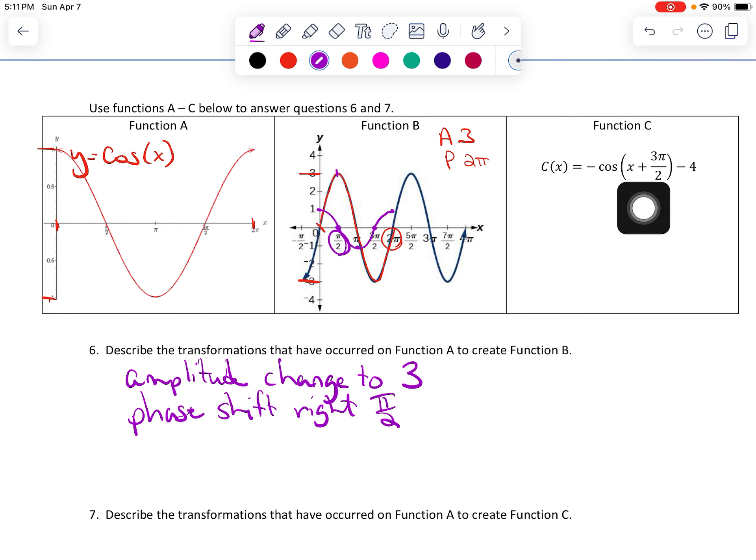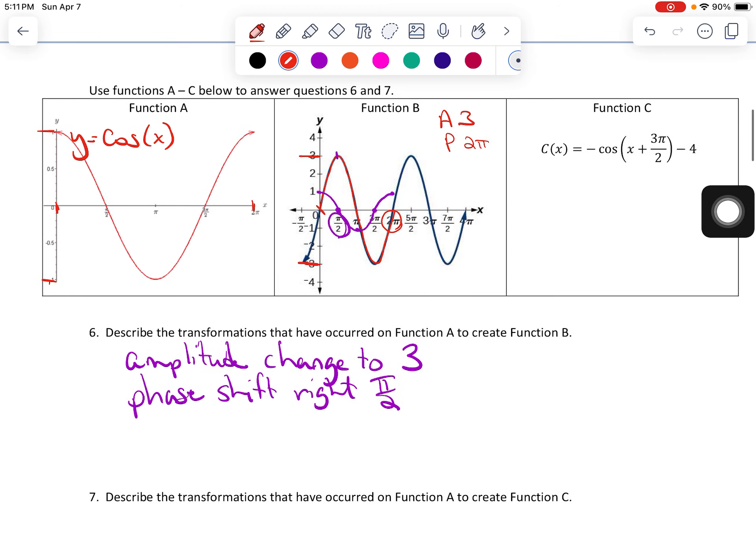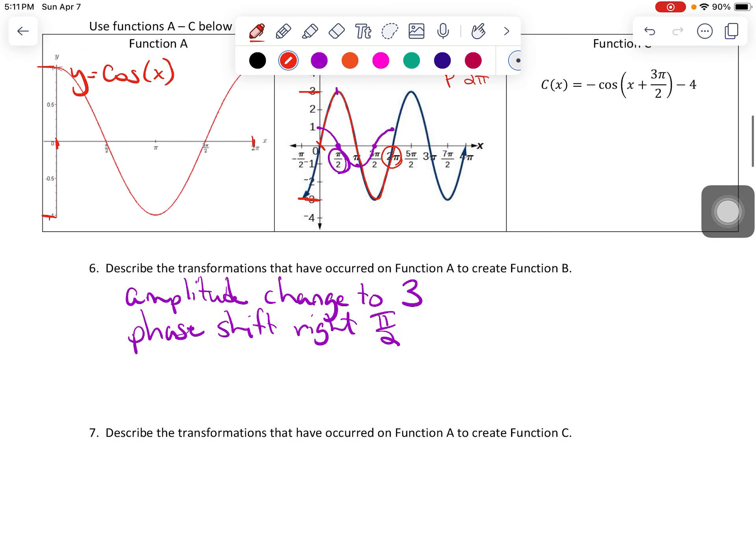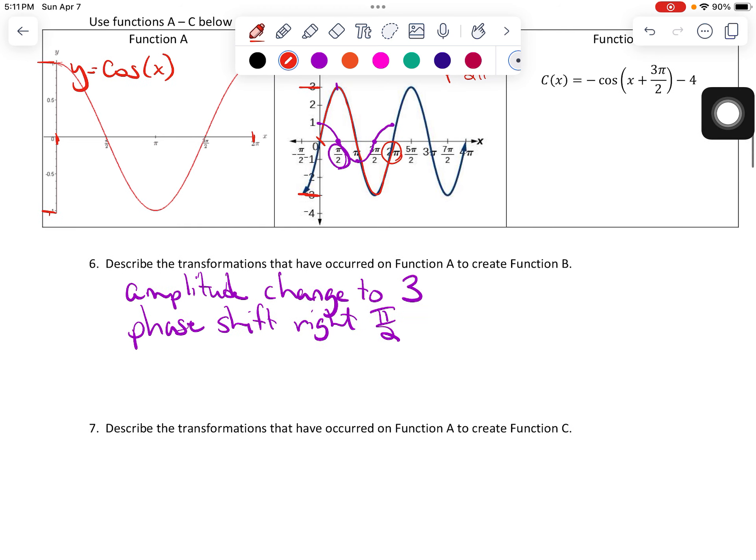All right. Now, part C here, function C here, there's no graph. You're just comparing this new equation to the original equation, which was just cosine of x. So I want to identify all the different pieces. And the first piece I'm going to pay attention to is the fact that there is this negative sitting here. So that's going to be a reflection. So reflect over the x-axis.